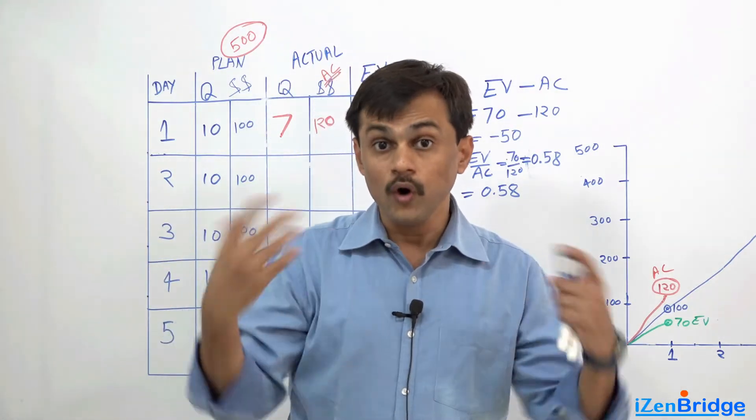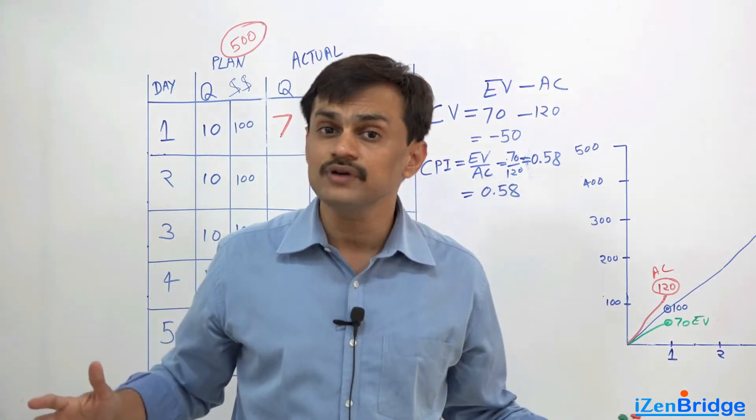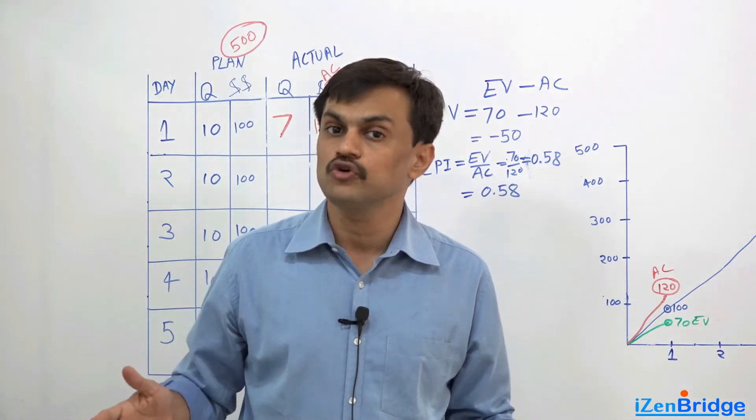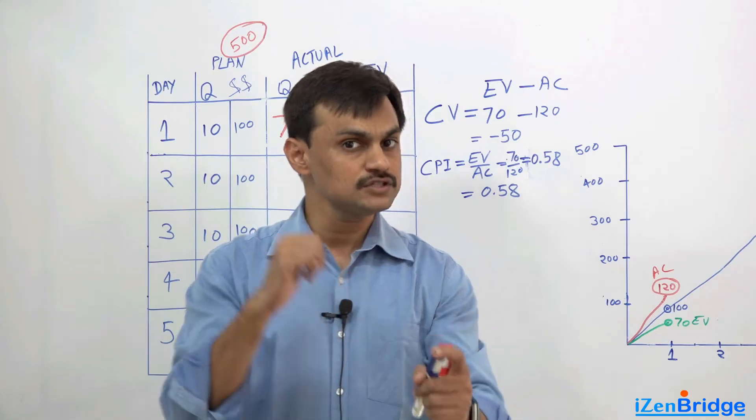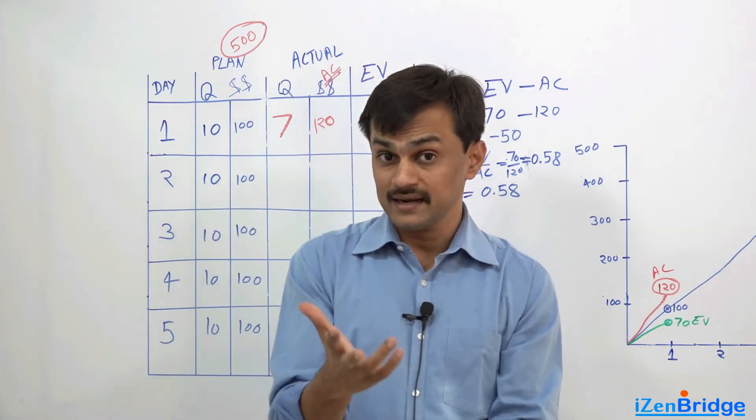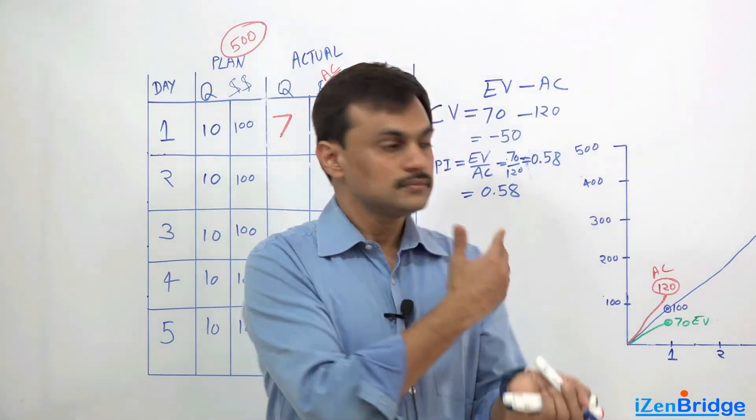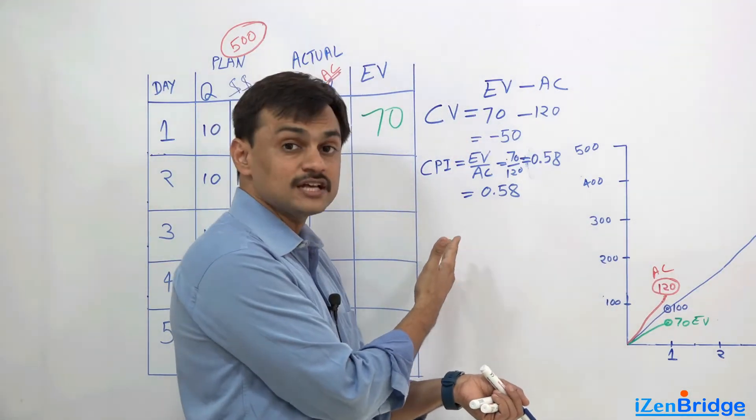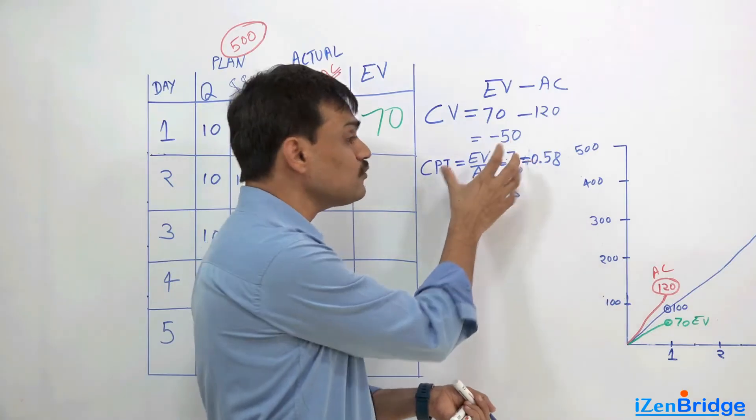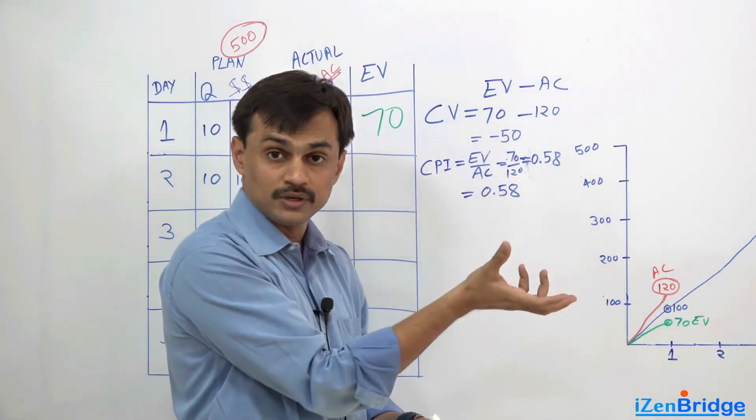If I would have got 1, it means I am getting maximum value of my money. If I would have installed 20 machines rather than 10 and by just spending $100, my cost performance index would have been 2 because my earning was 200 and my actual cost would have been 100.